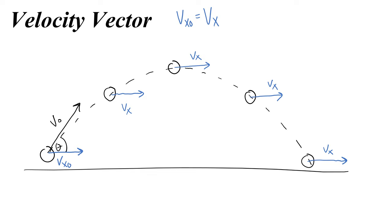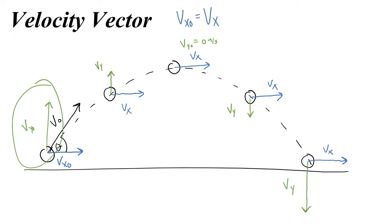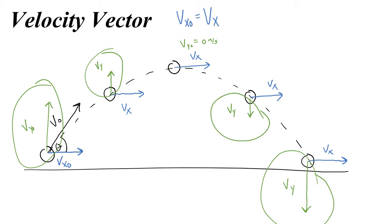The vertical component of velocity changes. vy₀ at the beginning first gets smaller, until at the top it equals zero, because gravity has slowed that vertical velocity down to zero. Then it starts to point down. At equal heights, the velocity vectors have equal magnitude but opposite directions — that's a useful symmetry. The velocity vectors at any equal heights will have equal magnitude and opposite directions.